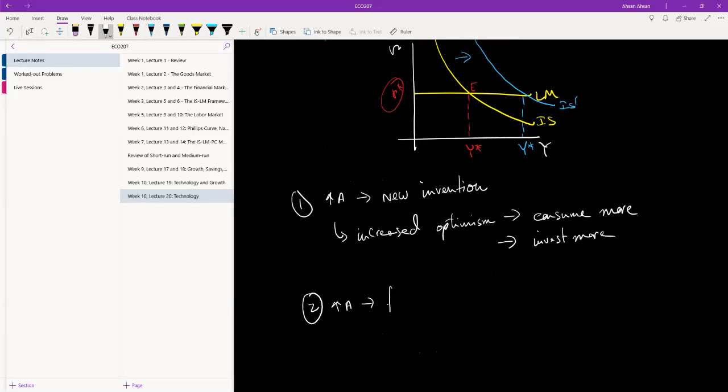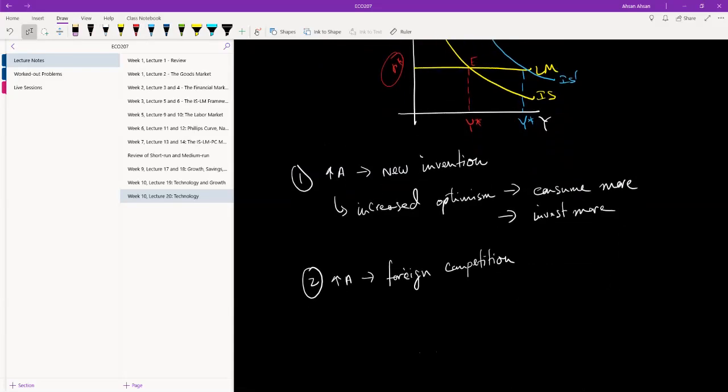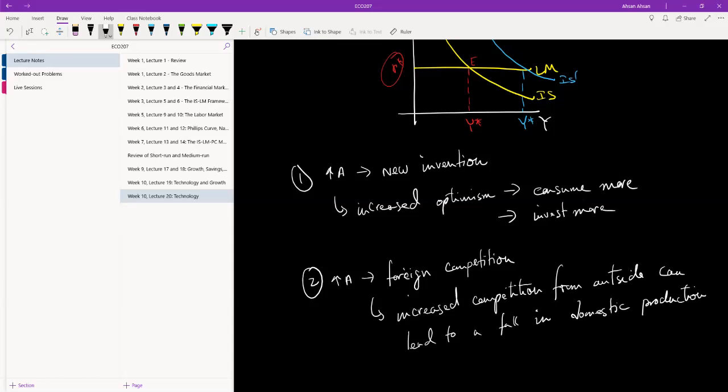At the same time, producers are also optimistic about the future. They want to increase their production capacities, so they will invest more. Increase in C and increase in I leads to a rightward shift of the IS curve. IS curve shifts and what that means is output has gone up, and when output goes up we know that employment will also go up because if you want to produce more you have to hire more. But consider this scenario: rise in A is coming from foreign competition.